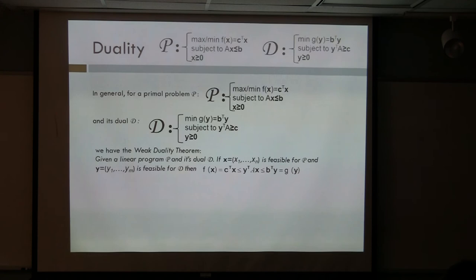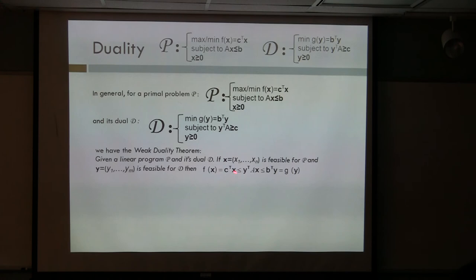What are the relationships? The first relationship is basically what I just said. It's called the weak duality theorem. That is, for a primal problem and its dual, the objective function for the primal will always be bounded by the objective function for the dual from above.